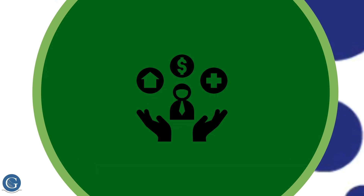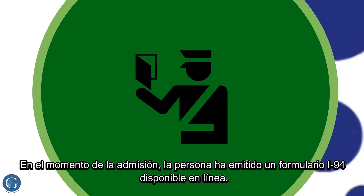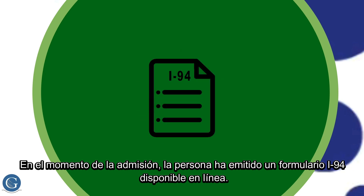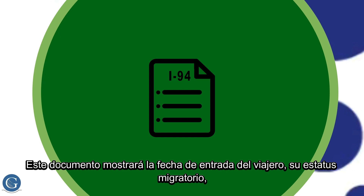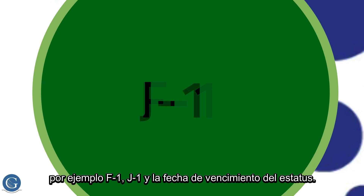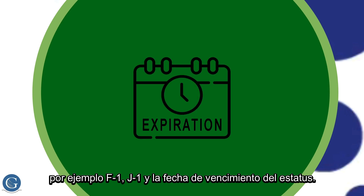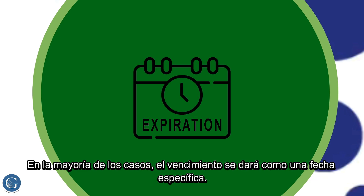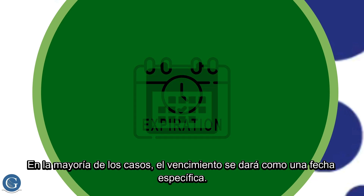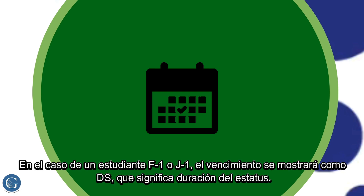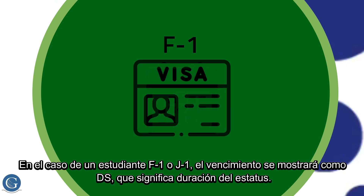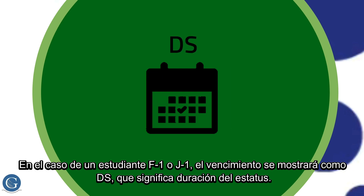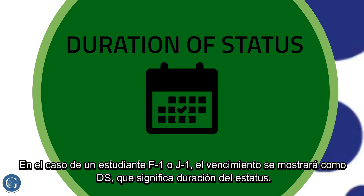At the time of admission, the individual is issued an I-94 form available online. This document will show the traveler's entry date, immigration status — for example, F1 or J1 — and the expiration date of the status. In most cases, the expiration will be given as a specific date. In the case of an F1 or J1 student, the expiration will be shown as DS, which stands for Duration of Status.